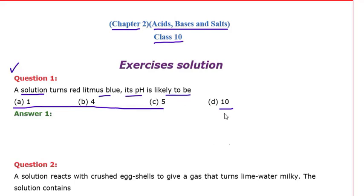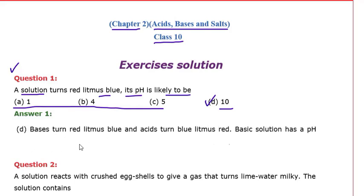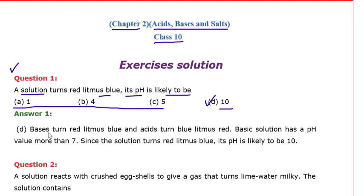Here 10 is greater than 7 and all the other three options are less than 7, so the correct option is D. The explanation: bases turn red litmus blue and acids turn blue litmus red. A basic solution has a pH value more than 7, so since the solution turns red litmus blue, its pH is likely to be 10.